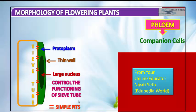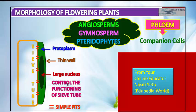The nucleus of the companion cell controls the functioning of the sieve tube and helps in maintaining the pressure gradient in the sieve tube. Companion cells are found only in angiosperms — not in gymnosperms and not in pteridophytes. Companion cells are a characteristic feature of angiosperms only.